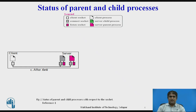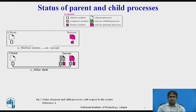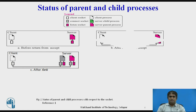Now, the status of the parent-child process. In the figure, you can see the status of the parent-child process with respect to the sockets. Part A shows the status before the accept function returns. The parent process uses the listen socket to wait for the request from the client. When the accept function is unblocked and returns, shown in part B, the parent process has two sockets: the listen socket and the connect socket.